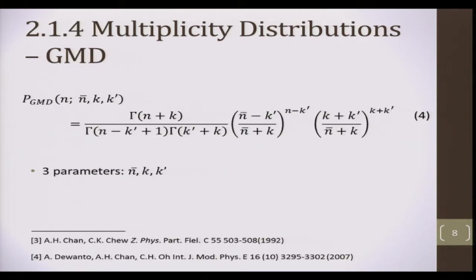Another distribution that describes the higher energy multiplicity data is the GMD, the generalized multiplicity distribution. It was obtained by Chan and Chiu, and has been shown to be a valid QCD solution to the stochastic branching equation. Notice there are three parameters: n bar, k, and k', which are physically motivated. N bar refers to the mean multiplicity, k to the average initial number of quarks, and k' to the average initial number of gluons.